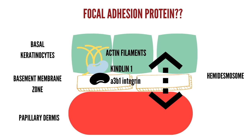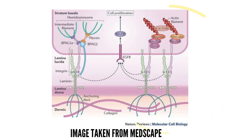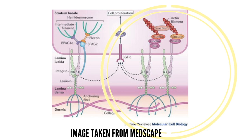It is the kindlin-1 protein which is defective in Kindler syndrome. This image shows the attachment of the actin filaments via kindlin-1 to the basement membrane zone. Due to mutation in this gene, there is disruption of the attachment of actin filaments at the dermo-epidermal junction. Importantly, Kindler syndrome is the first genodermatosis caused by a defect in actin–extracellular membrane linkage, rather than keratin–extracellular membrane linkage, which underlies the pathology of other inherited skin fragility syndromes such as other subtypes of epidermolysis bullosa.